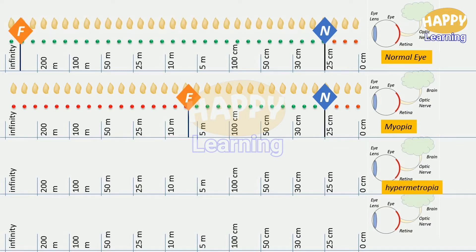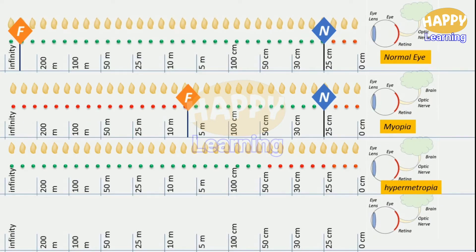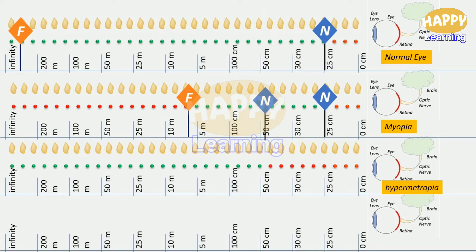Now let us take the example of an eye with a problem called hypermetropia. This eye is unable to see objects placed at shorter distances — from 25 centimeters to a few meters, this eye cannot see clearly. But at longer distances, its visibility is good. So this eye has the near point at a few meters and the far point at infinity.